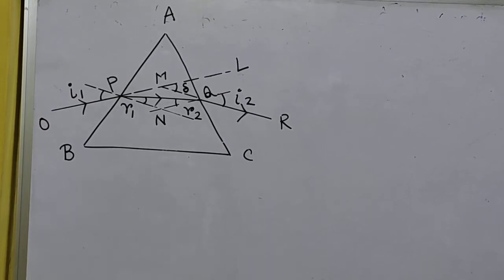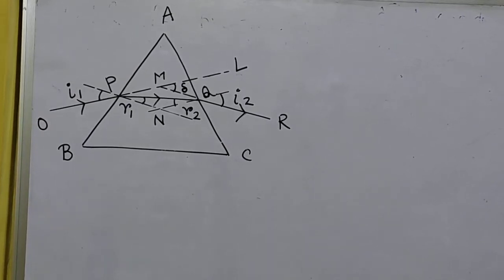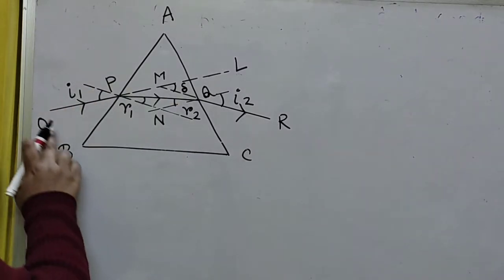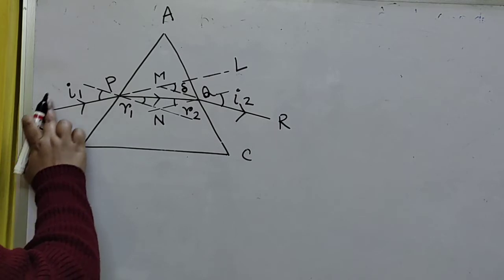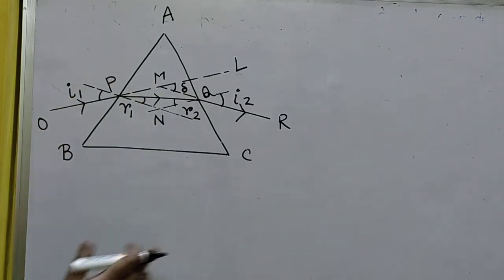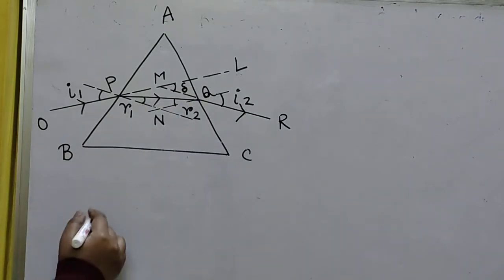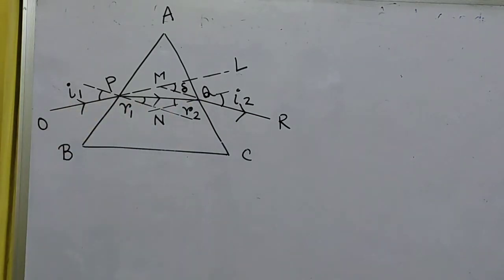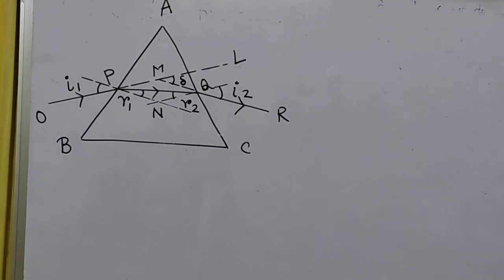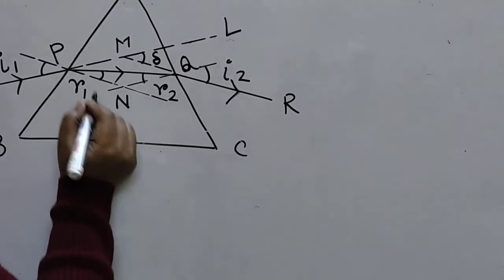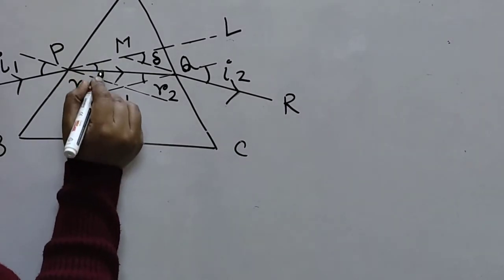As I had said, I will continue with the discussion. Now see what is happening. If I don't have a prism, the ray should follow along the OPM path. But since there is a prism, the ray is following the QR path. So this angle — I am zooming it — this angle is my first angle of deviation for the incident ray.